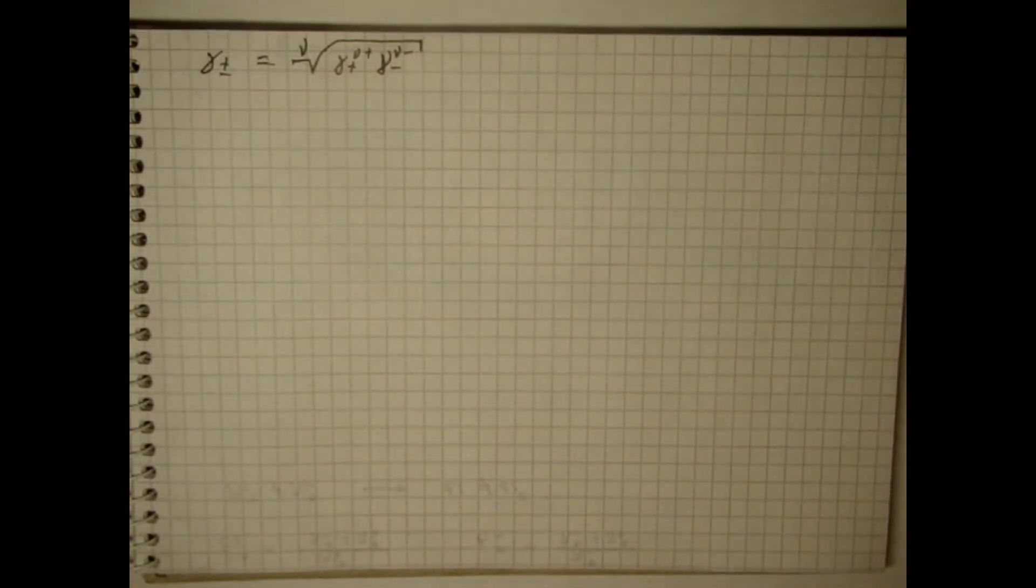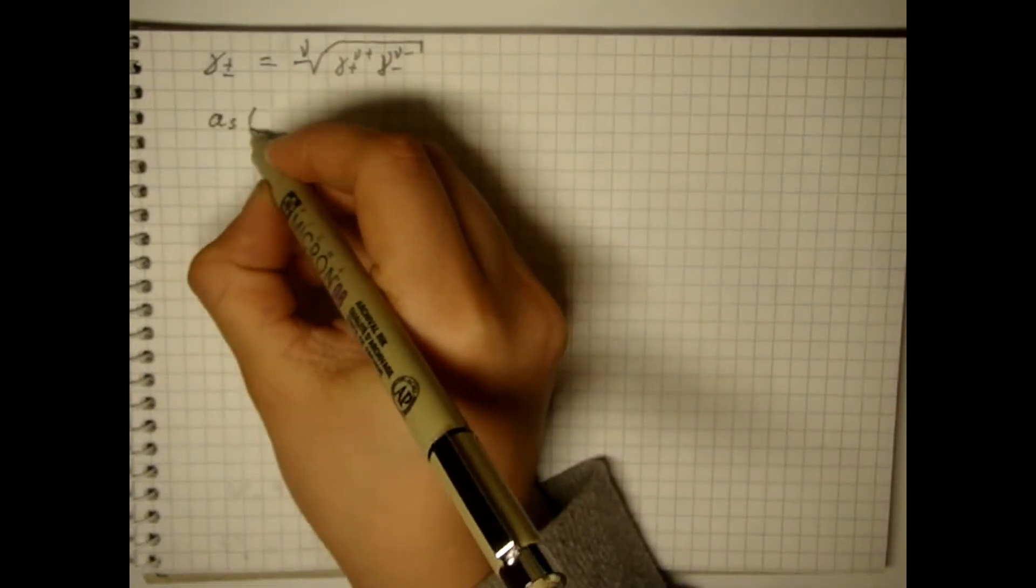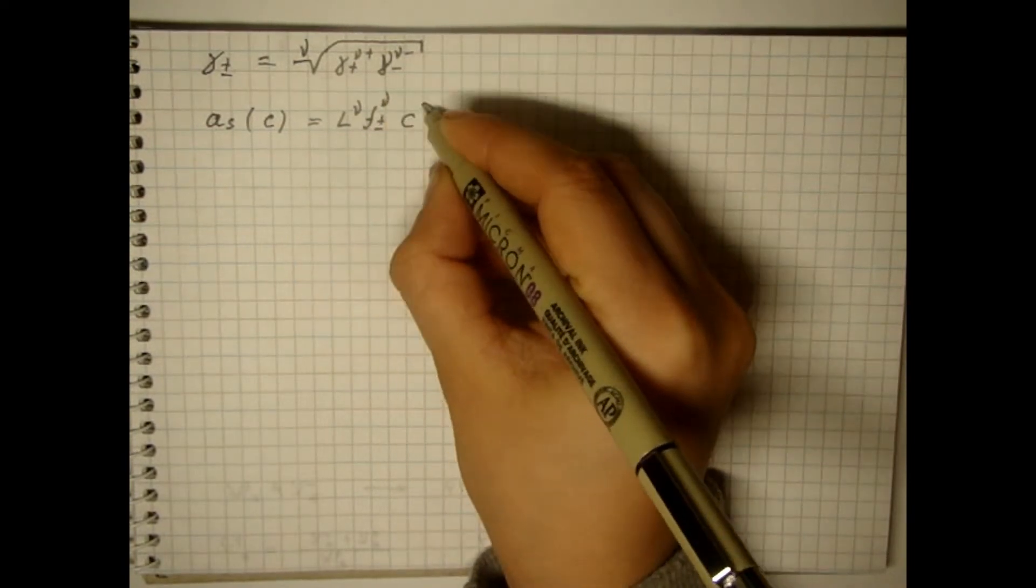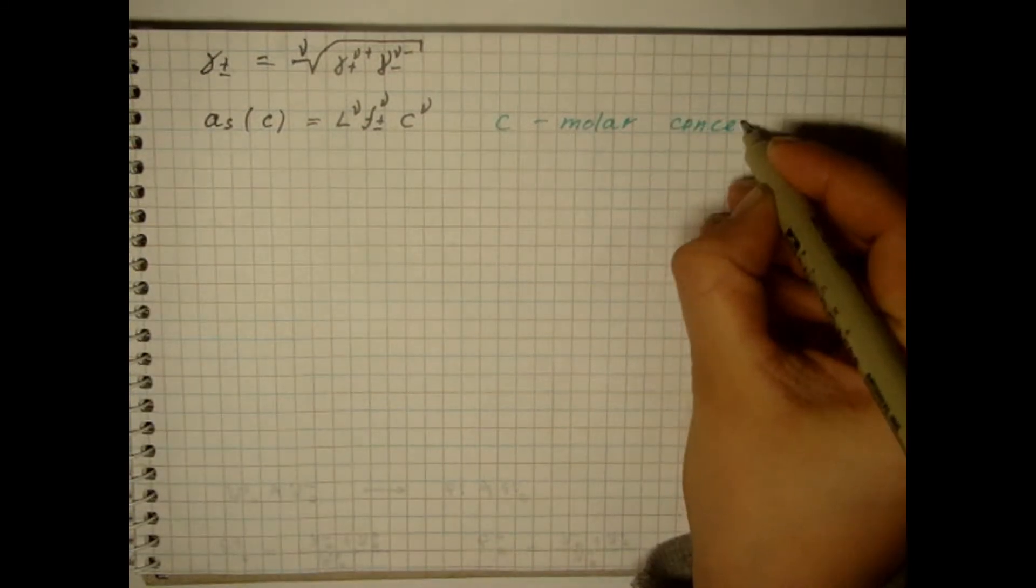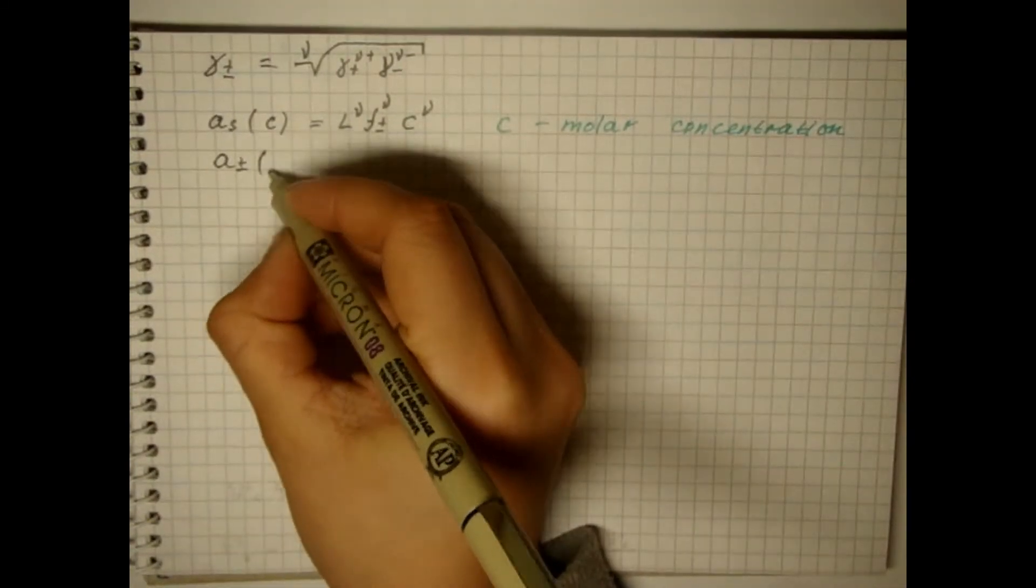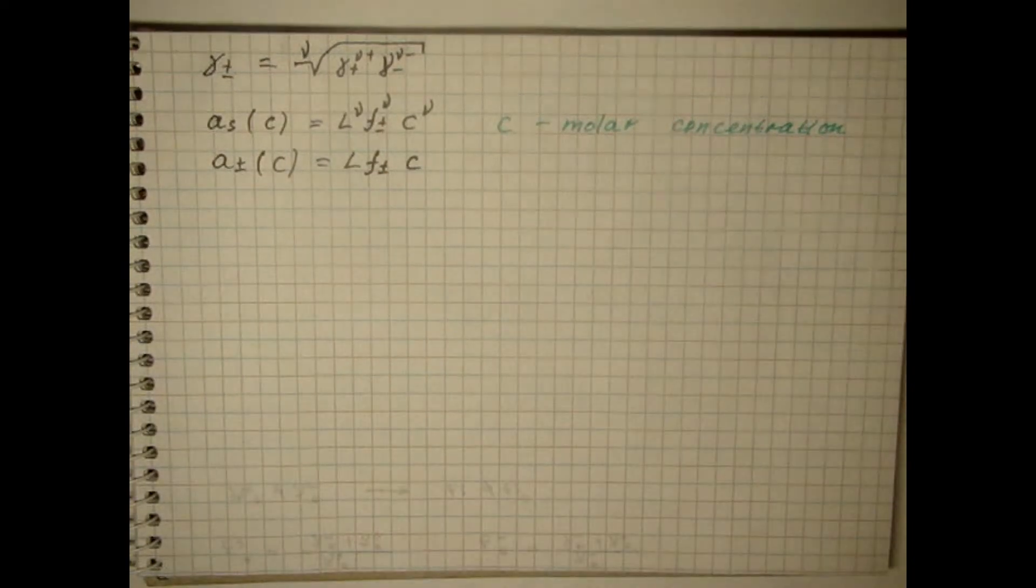Similar ratios are obtained for other concentration scales. In all concentration scales, the average activity coefficients at infinite dilution tend to unity. Since in this case, the ion-ion interaction tends to zero and the solution acquires ideal properties.